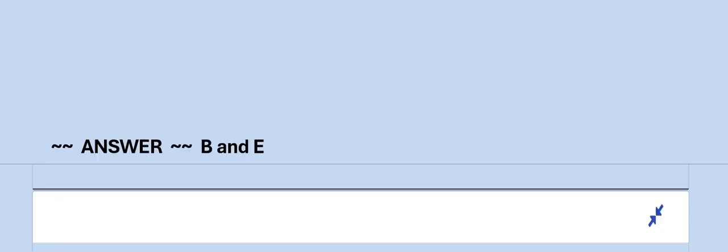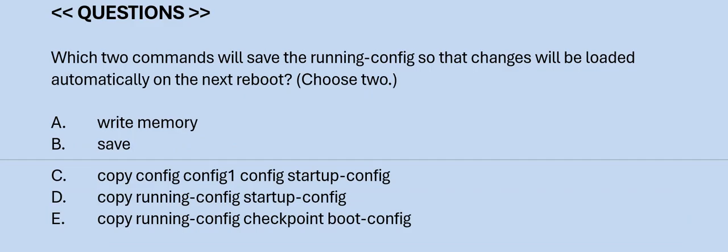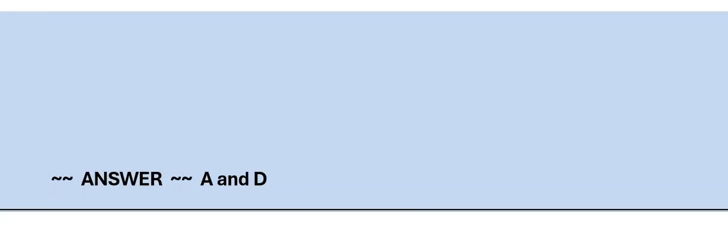Next question: Which two commands will save the running config so that changes will be loaded automatically on the next reboot? Choose two. Option A: write memory. Option B: save. Option C: copy config config1 config startup-config. Option D: copy running-config startup-config. Option E: copy running-config checkpoint boot-config. The correct answers are Option A and D.